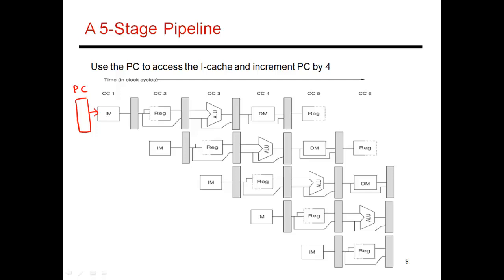With this input PC, you go to that location in memory and you fetch that instruction. You could be fetching that instruction from an instruction cache, a topic we will discuss later, or you could be fetching it from the actual system memory itself. Once you fetch that instruction, it is provided as an input to this latch, and at the next clock edge, that instruction gets stored in this latch and then serves as an input to the next stage.